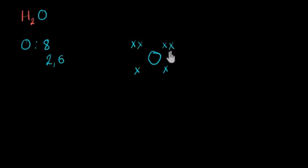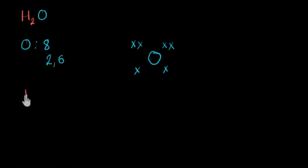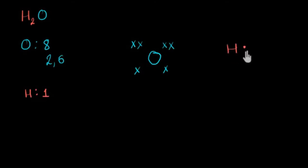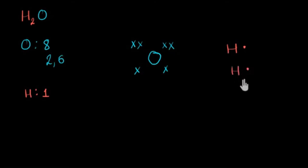We only draw the outermost electrons because in a chemical reaction, only the outermost electrons of an atom participate, so there's no need to draw the inner electrons. Now let's come to hydrogen. Hydrogen's atomic number is one, which means it has only one electron in its outermost shell. So its electron dot structure is H with one dot — I'm using a dot to represent hydrogen's electron. You can use a cross or dot interchangeably. Since there are two hydrogens, I'm going to show two hydrogens here.